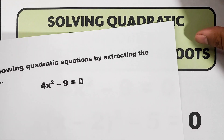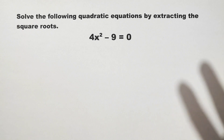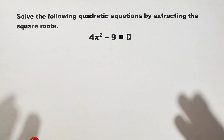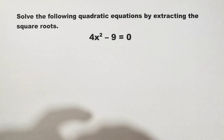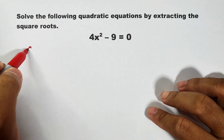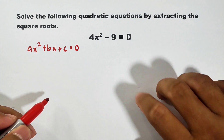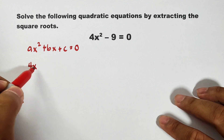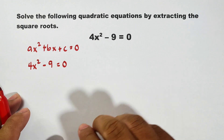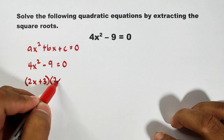Before we start diving into extracting the square roots, let me remind you first how to use solving quadratic equations by factoring. This equation is 4x squared minus 9. We will try to solve it first by factoring and then later on, we will use extracting the square root. Now remember that in factoring, you need to convert the equation in standard form: ax squared plus bx plus c is equal to 0. This equation is already in this form: 4x squared minus 9 is equal to 0. By factoring, this one is under difference of 2 squares, meaning we can factor this out as (2x + 3)(2x - 3).